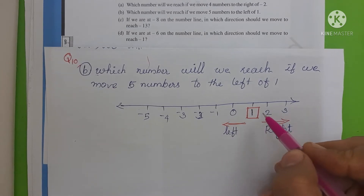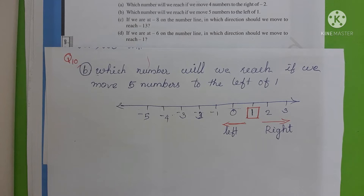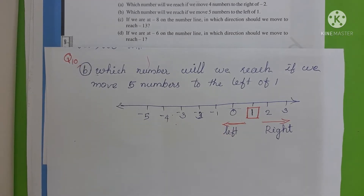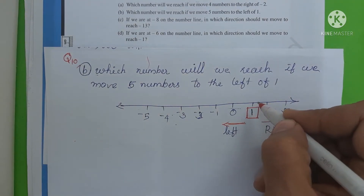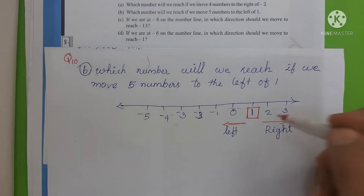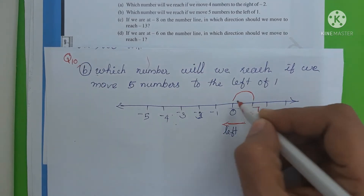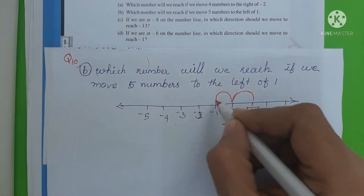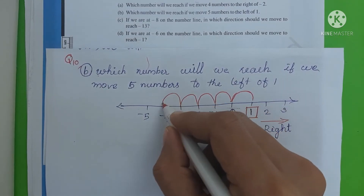We move in the left direction. Starting from 1, we count 5 numbers to the left: 1st number, 2nd, then 3rd, then 4th, then 5th.